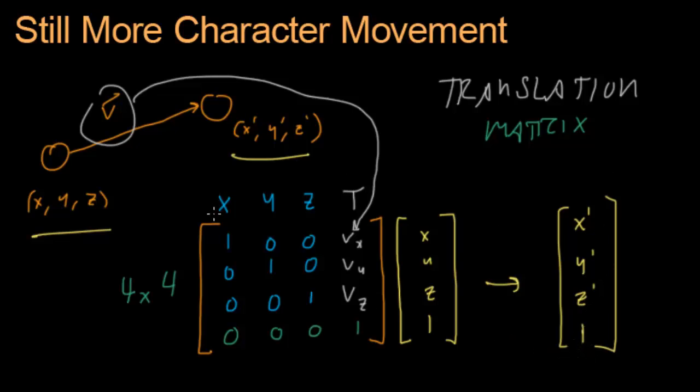And so we have a translation matrix, a matrix that will translate any vertex that's put into it by this vector v. So let's go to the code and see how we can use this to do some really cool stuff.